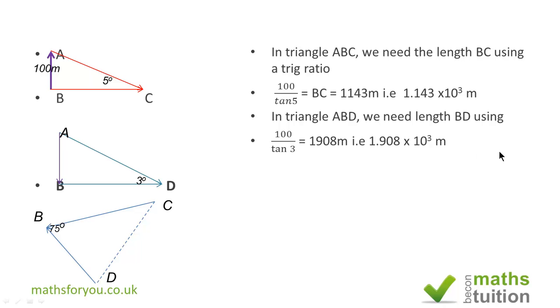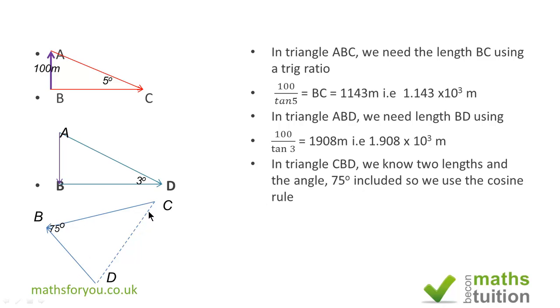Now we know CB and we know BD. So we now need to find CD, which is opposite the angle of 75 degrees at B. So we need to use the cosine rule.